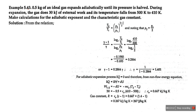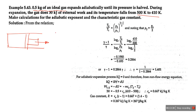The last numerical: 0.5 kg of an ideal gas expands adiabatically until the pressure is halved. During the expansion the gas does 30 kilojoule of external work. Since work is done by the system during expansion, W = +30×10³ joule. So P2 = P1/2.